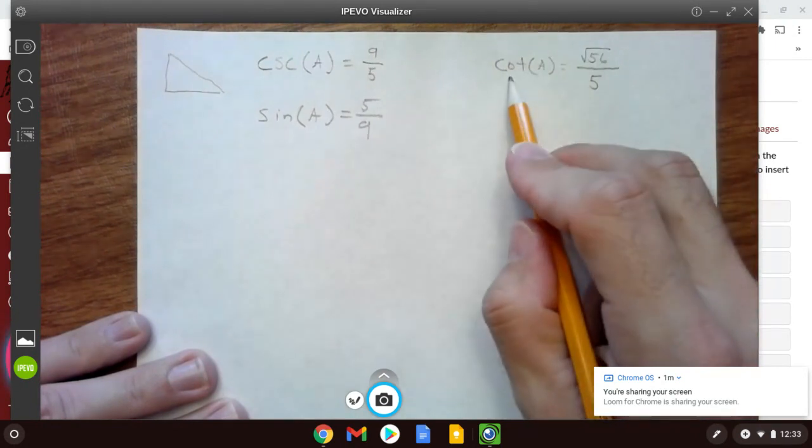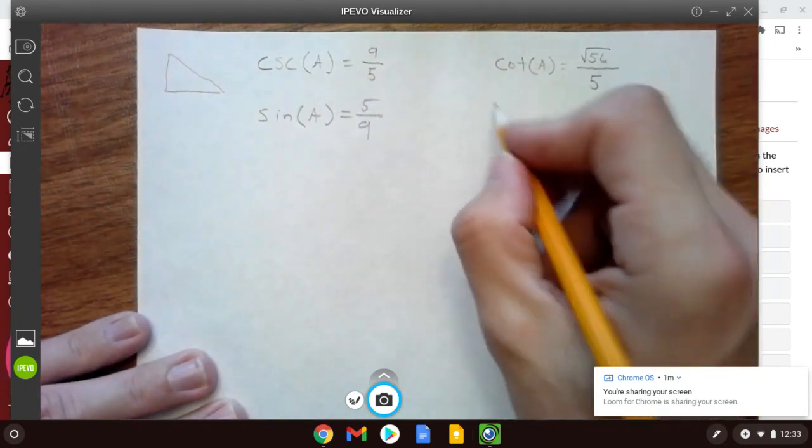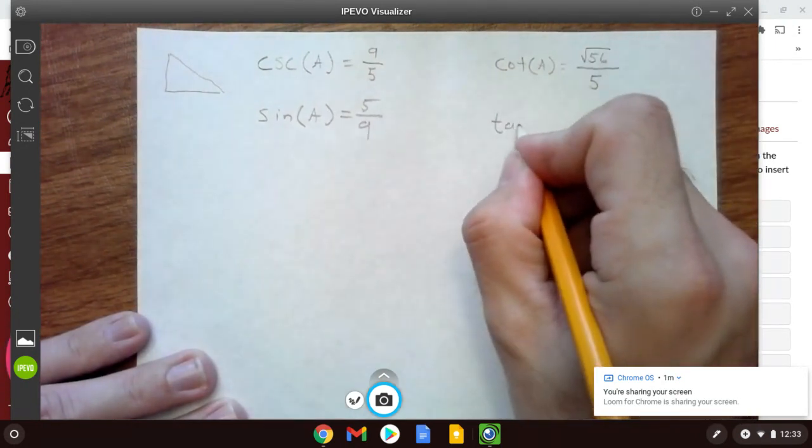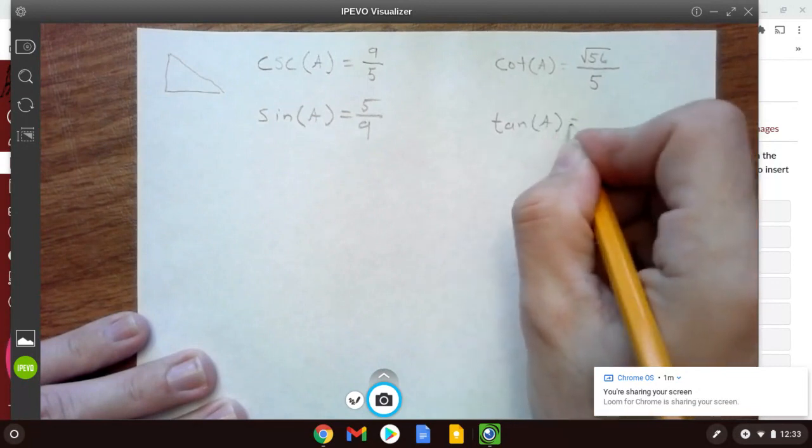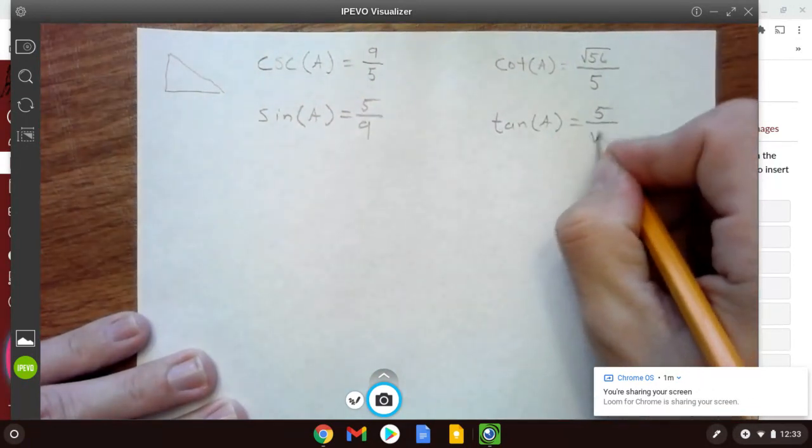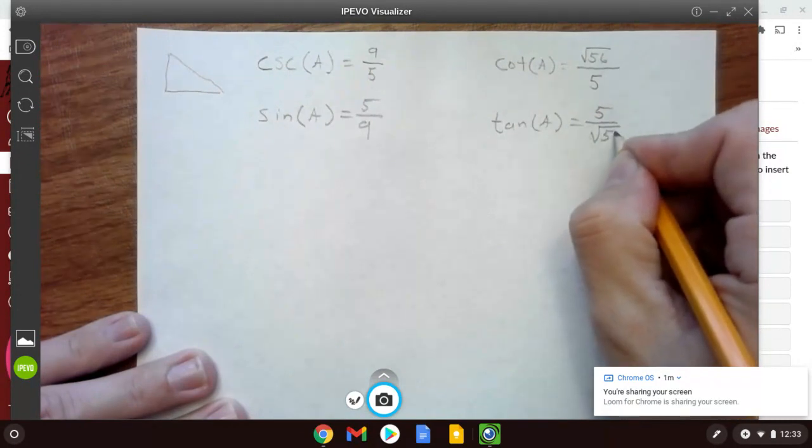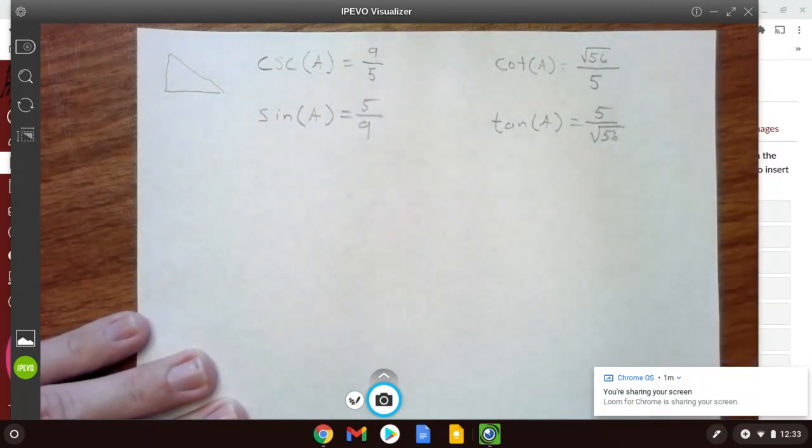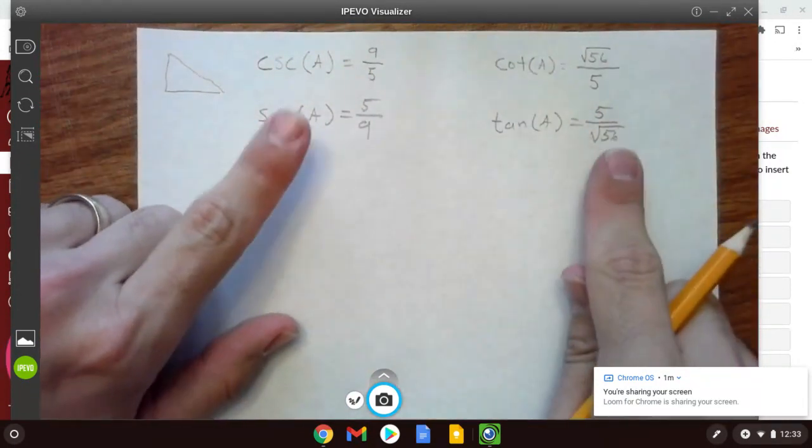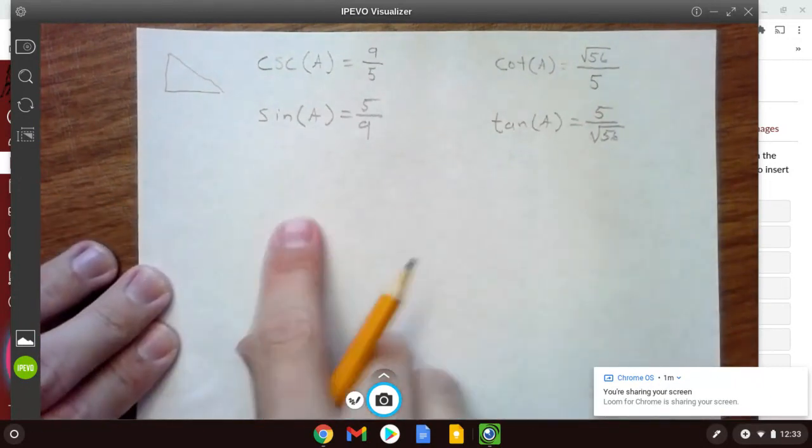All right, so if cotangent is equal to this, that means that tangent is equal to 5 over root 56. So with these pieces right here, we're going to be able to fill in the other two.